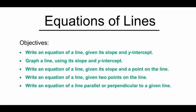Equations of lines. The objectives in this section are to write an equation of a line when you're given the slope and the y-intercept, to graph a line using the slope and y-intercept, to write an equation of a line when you have the slope and some point on the line that's not the y-intercept, and then to write an equation of a line when you're given two points on the line, and lastly, when you have a line that's parallel or perpendicular to a given line, to write the equation.